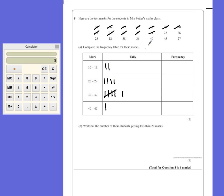So just finish this tally section off. 23, that means it's a diagonal line through there. 12 goes in the first group, 38 in that group, 36, 40, 45 and 27.